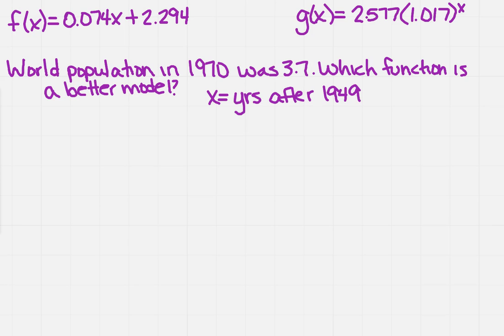In each of these, these are population models, and x is the number of years after 1949. That's the key.